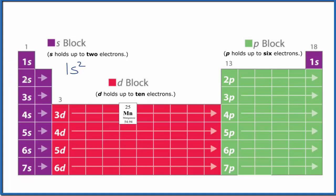Then the second energy level, 2s¹, 2s². Go over to the p, 2p 1, 2, 3, 4, 5, 6. p holds up to 6, so 2p⁶.